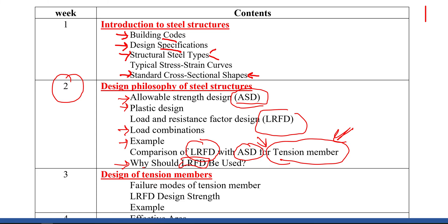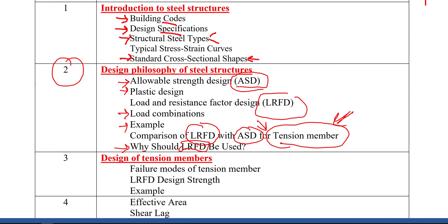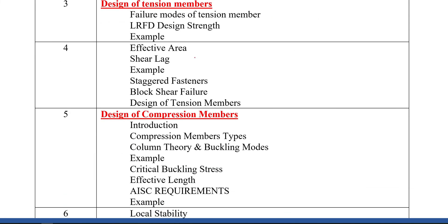After that, in week three, we talk about the design of tension members — the first structural element we deal with from a design point of view. We'll discuss the failure modes of tension members, as there are different failure modes, then cover LRFD design strength and apply what we've learned through examples.